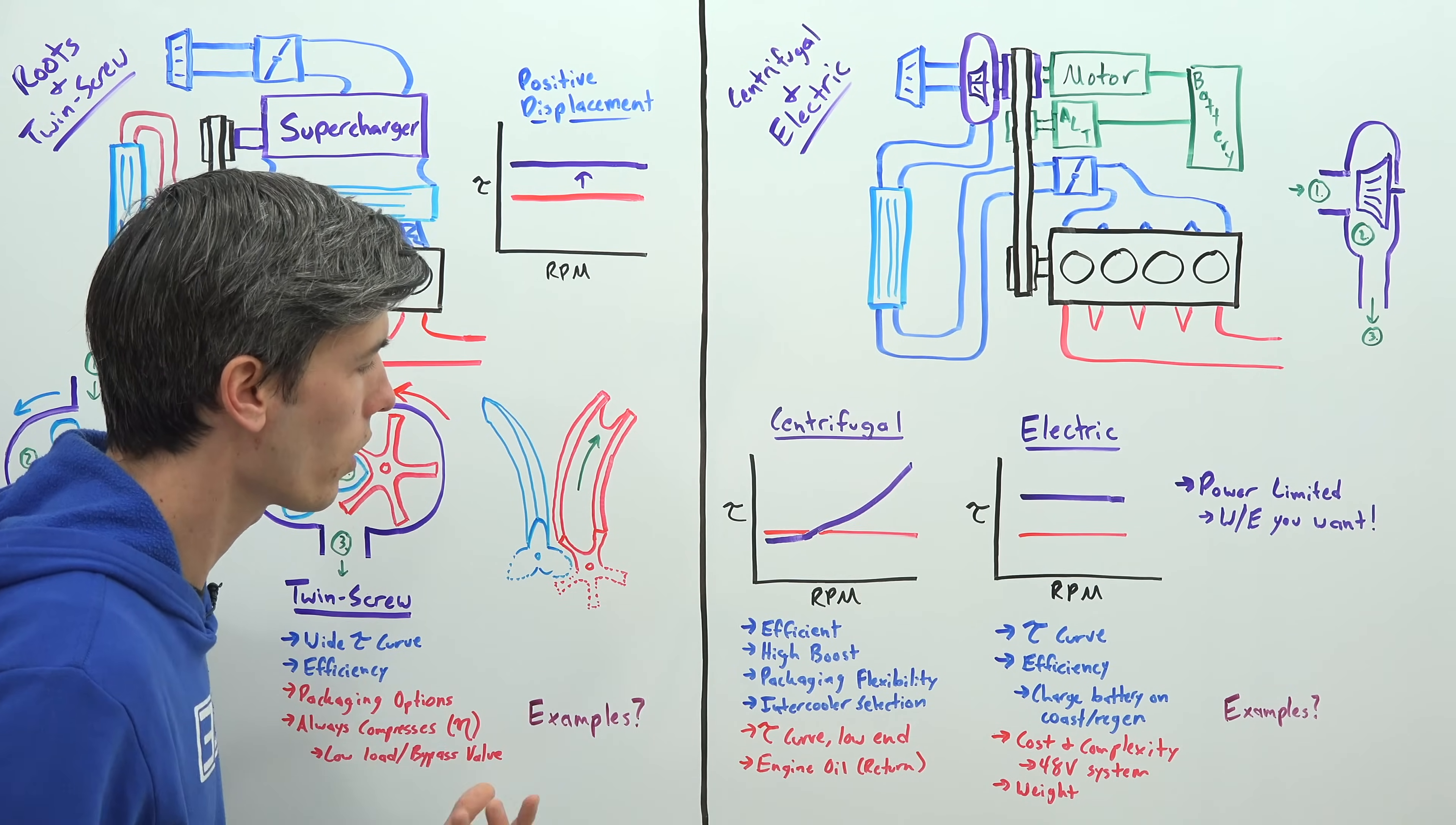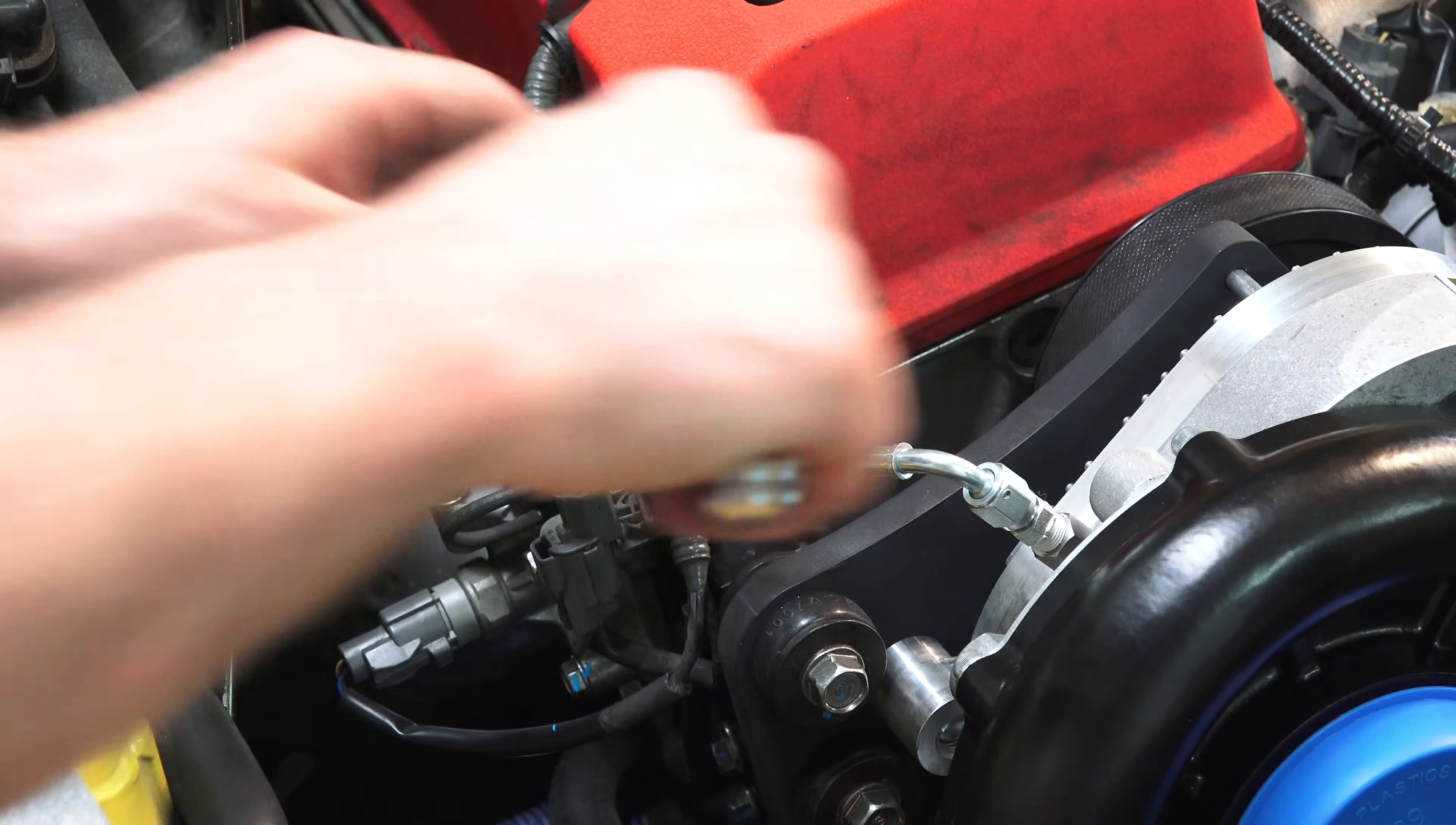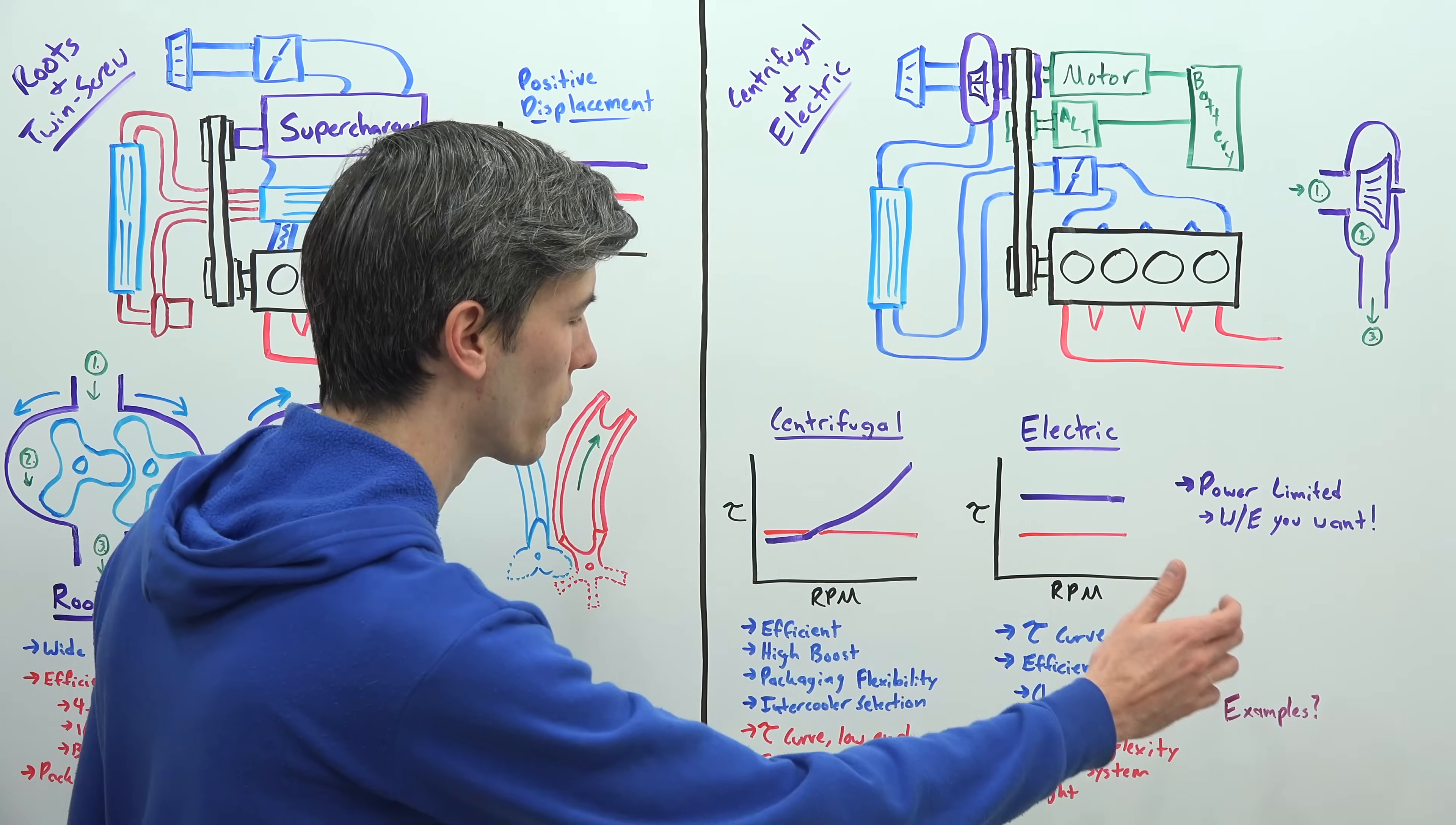Also allows for flexibility in using an intercooler up front or if you want to use an air to water intercooler. Of course the downside being that torque curve and also some of these do use engine oil, and so you'll have a return from that supercharger to the oil pan versus some of the other methods. The Roots and Twin Screw, they will often have their own contained oil systems that don't need to be changed out all that regularly.